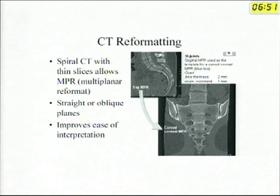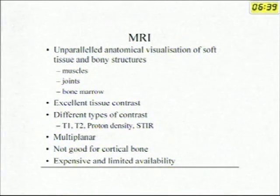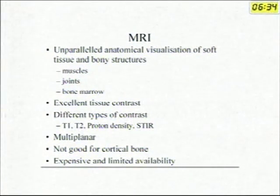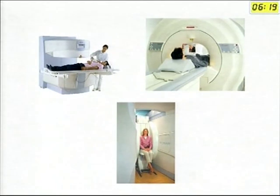MRI is different. It gives us unparalleled visualization of muscles, joints, and bone marrow with good contrast. We have different kinds of images — T1, T2, proton density — which many people don't understand. One important message: MRI is not good for cortical bone. If you want to look at the cortex, CT is better. The way I remember this is: M for marrow, M for MRI; C for cortex, C for CT.